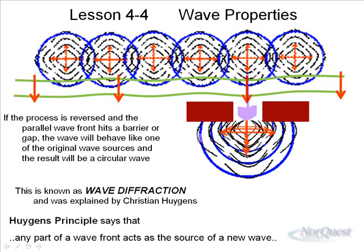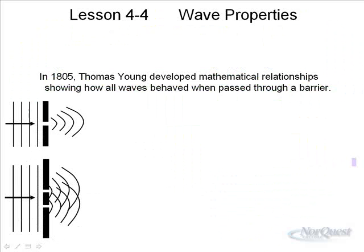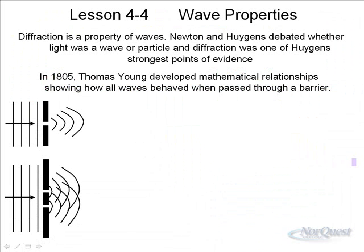Since diffraction is a property of waves, Newton and Huygens debated whether light was a wave. One of the things that Young used as evidence was diffraction. Since Huygens explained that diffraction could only be a wave property, Young was able to show in 1805 that light exhibited diffraction properties and therefore light must be a wave — countering Newton's argument that light was some kind of particle.